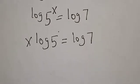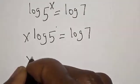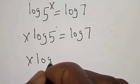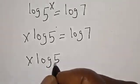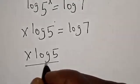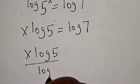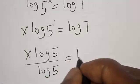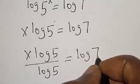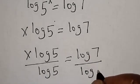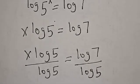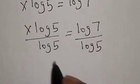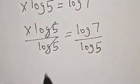Let's divide both sides by log 5. Now, x log 5 over log 5 is equal to log 7 over log 5. Now, this one will cancel this.